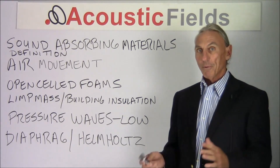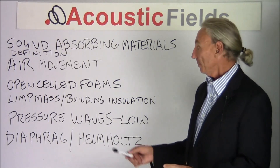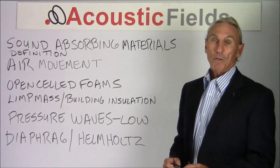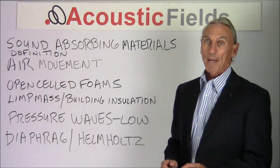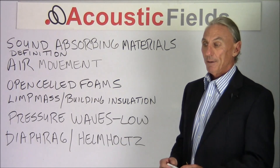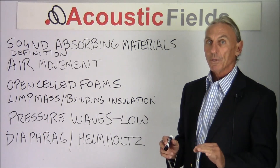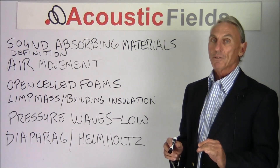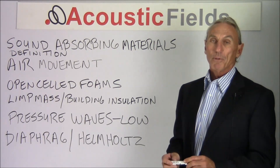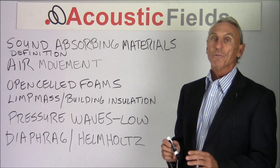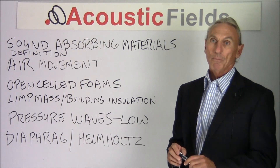You get the heat process and then you get loss of amplitude, so you slow the reflection down — sometimes too much. Open-celled foams and limp mass products are really good at that. Anything that air moves through: for this process to work, it usually only pertains to middle and high frequencies, where you need molecular velocity or air movement.